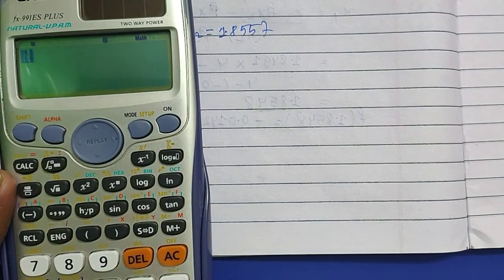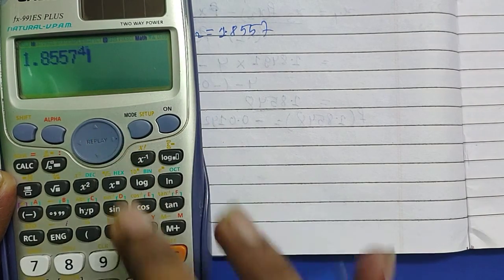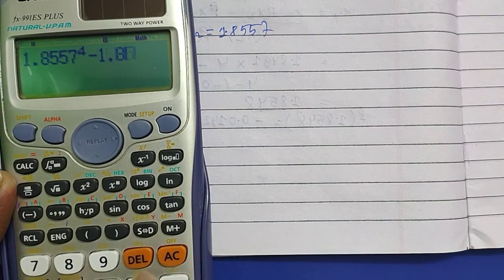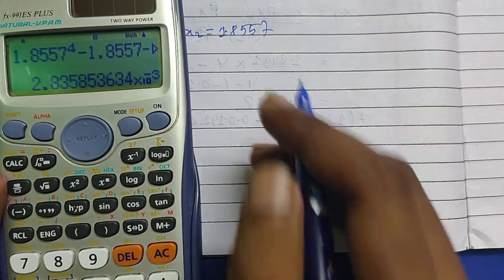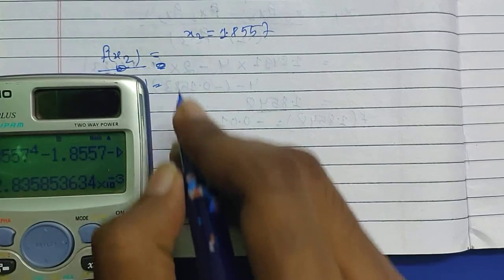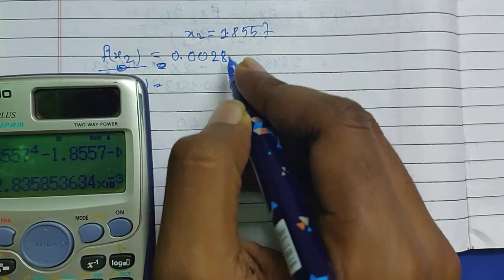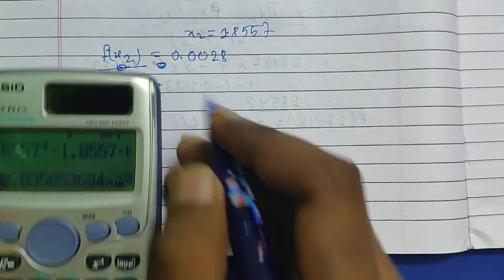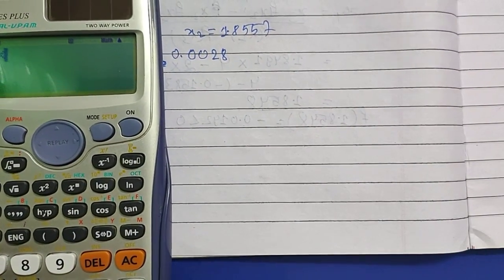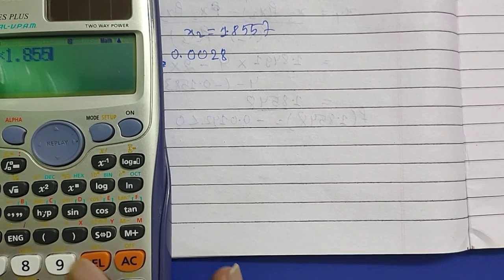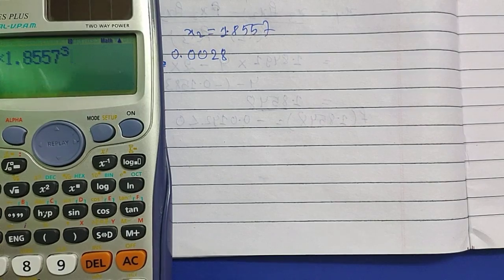As we had got the value of x_2, we have to find f(x_2) and f'(x_2). For finding the value of x_2, we have got x_2 = 1.8557. Now put the value of x as 1.8557 in each equation, then what we will have is 1.8557^4 - 1.8557 - 10, and we have got it as 0.0028.